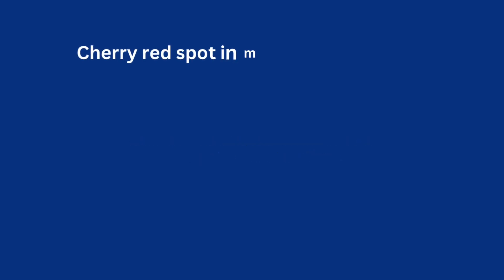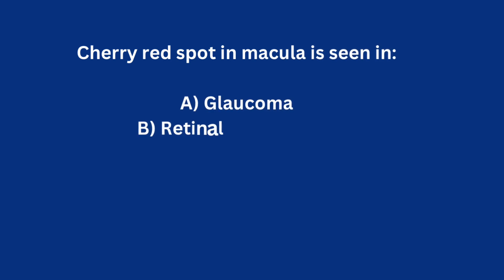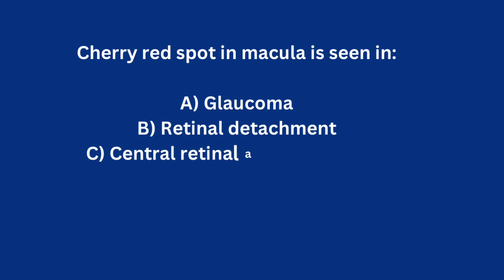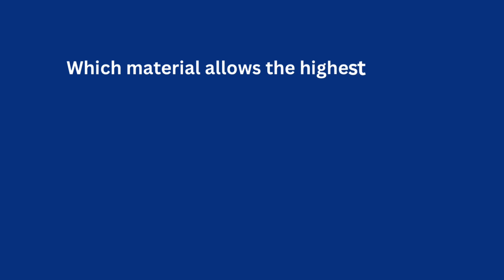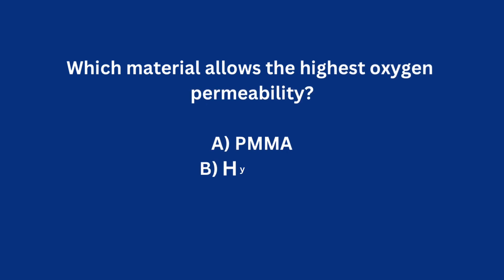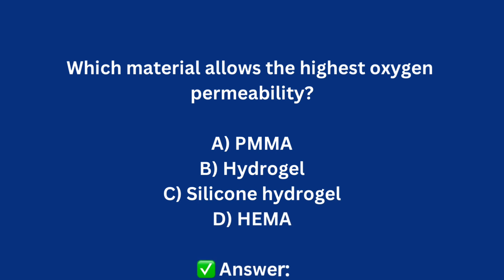Cherry red spot in the macula is seen in: A) Glaucoma, B) Retinal detachment, C) Central retinal artery occlusion, D) Diabetic retinopathy. Correct answer: C) Central retinal artery occlusion.